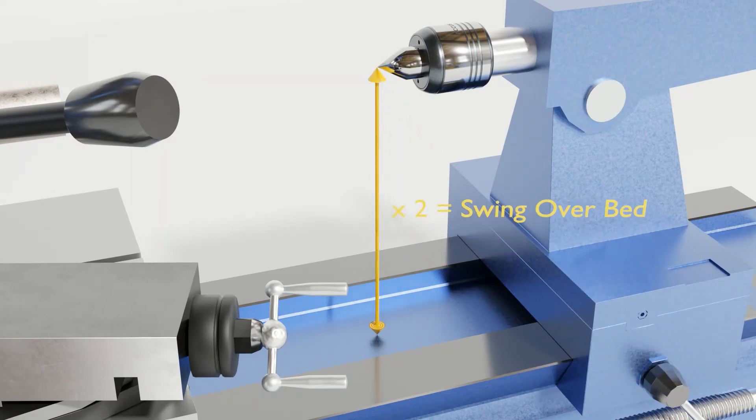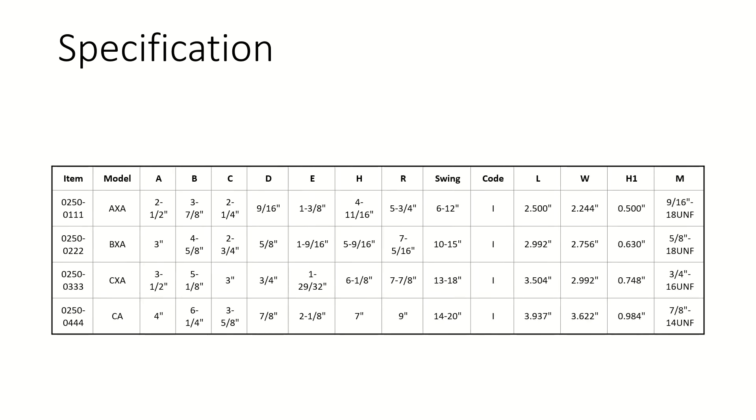Then check the specification table of our quick change tool posts. The lathe swing column indicates which tool post works with the lathe.